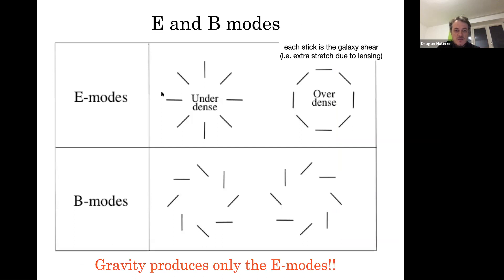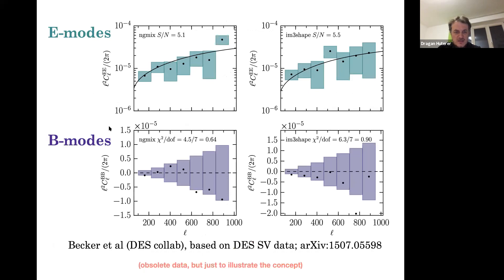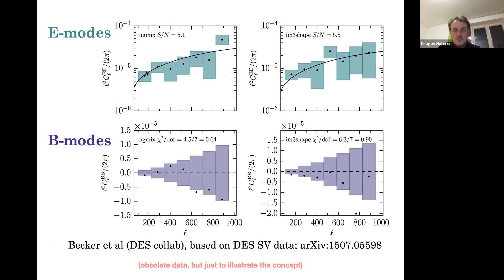Today, weak lensing is considered one of the best probes of dark matter and dark energy. As you map out the distribution of galaxy shapes, each galaxy shape is like a spin-2 field — little sticks telling you which way the galaxy is elongated. You can describe this field on the sky as E modes and B modes, just as we do for CMB polarization. If you have an under-dense or over-dense point, the galaxies around it will be lined up either radially or tangentially. E modes carry all the lensing information; B modes should be zero.